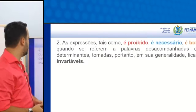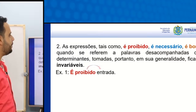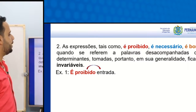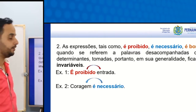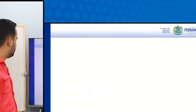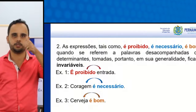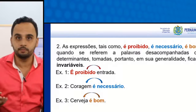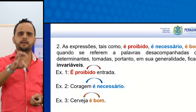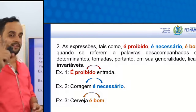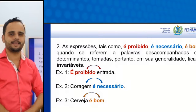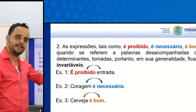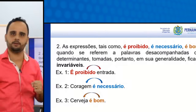As expressões 'é proibido', 'é necessário', 'é bom', quando se referem a palavras desacompanhadas de determinantes, tomadas em sua generalidade, ficam invariáveis. Atenção pra isso! Essas palavrinhas — proibido, necessário e bom — quando não vierem acompanhadas de determinantes, sobretudo o artigo, vão ficar sempre invariáveis. Exemplos: 'é proibido entrada'; 'coragem é necessário'; perceba — não tem o artigo.